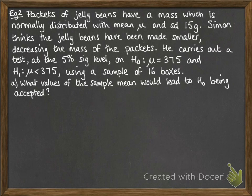Okay, next example. Packets of jelly beans have a mass which is normally distributed with a mean μ and standard deviation 15. Simon thinks that the jelly beans have been made smaller. He thinks it's a conspiracy to charge more for less jelly beans in the packets. So he thinks that the mass has decreased and tested it at a 5% significance level with the null hypothesis that the mean is 375 and alternative that it's less than that and used a sample of 16. So what values of the sample mean would lead to H0 being accepted? So our null hypothesis is accepted. So we're looking for the acceptance region.